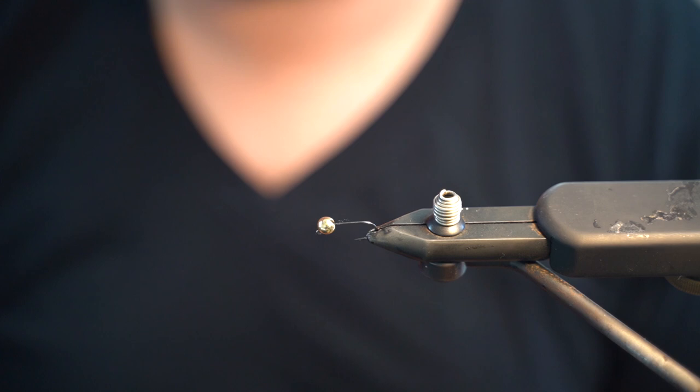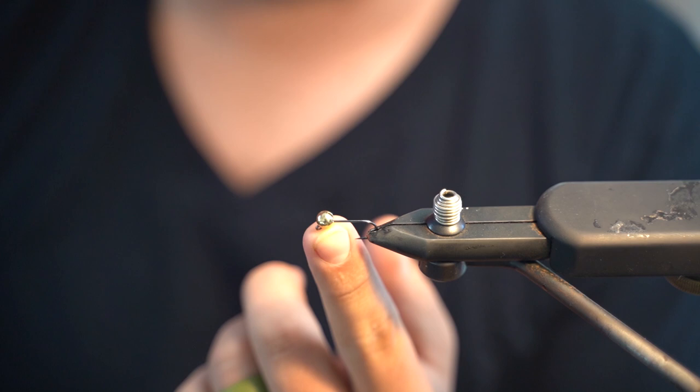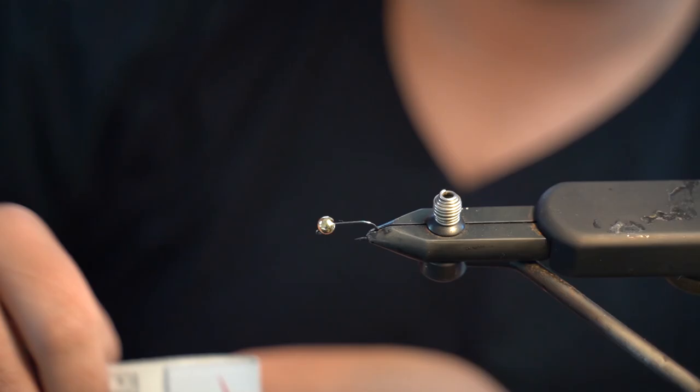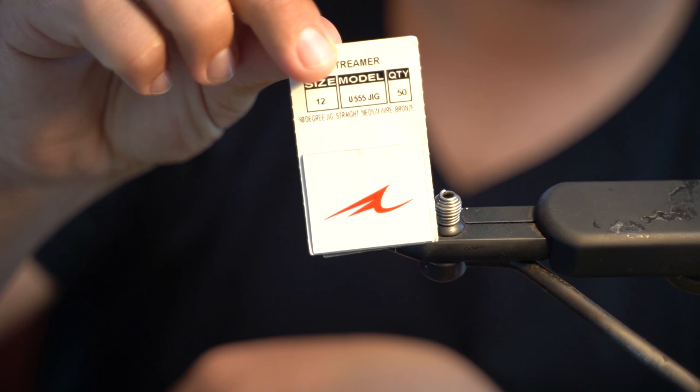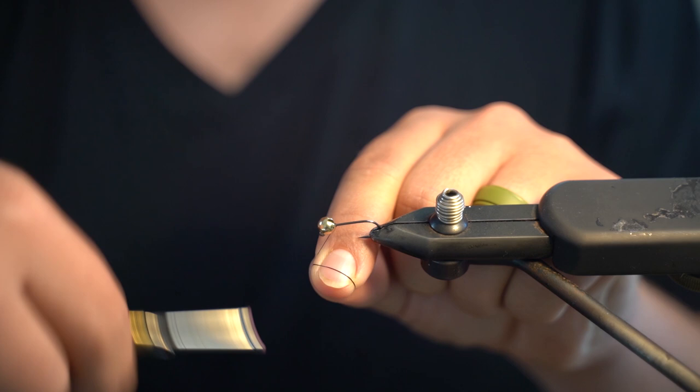This is a 5.5 millimeter tungsten bead, very large, on a size 12 Daiichi 555 hook. It's a 60 degree jig hook, I believe. We'll just get started. Color really doesn't matter - this is going to be mostly material here, very little thread's going to show through.